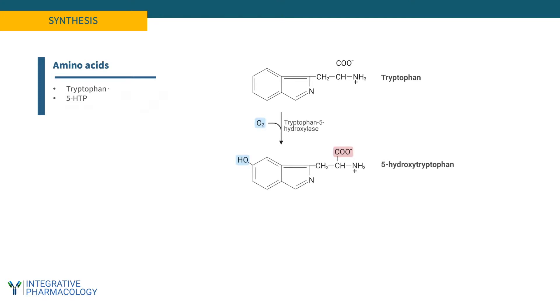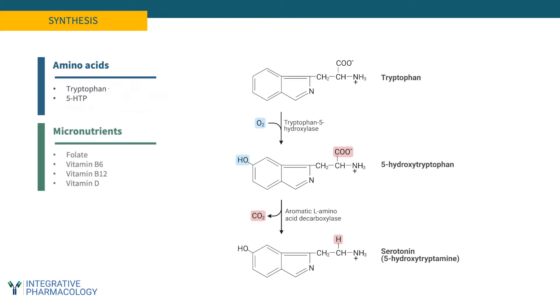Tryptophan is hydroxylated to 5-hydroxytryptophan by tryptophan 5-hydroxylase, and then it is decarboxylated to serotonin via the enzyme aromatic L-amino acid decarboxylase. Micronutrients that support this process include folate, vitamin B6, vitamin B12, and vitamin D.